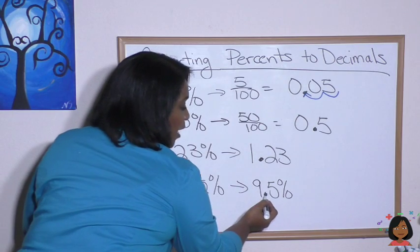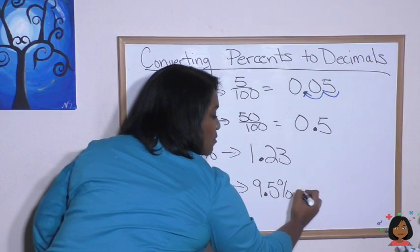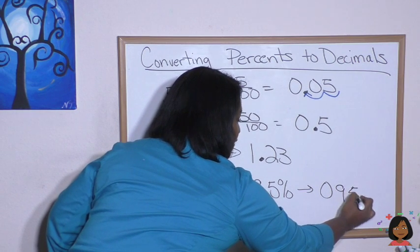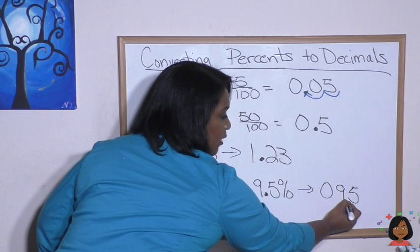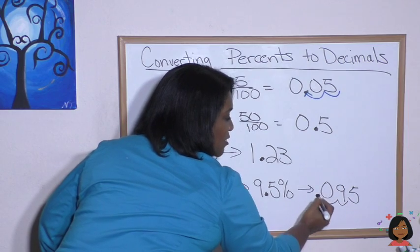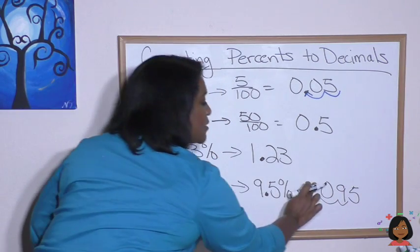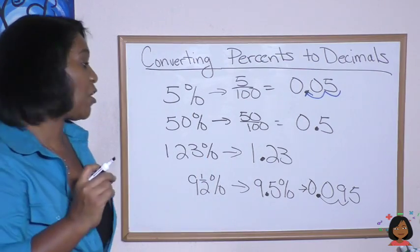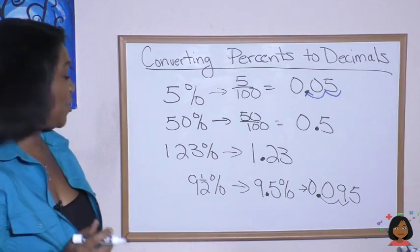Here we go - we're going to have to use some zeros as placeholders. So let's write it like this: 9.5. We know the decimal is here. Let's move it: one, two. So the answer is going to be 0.095.